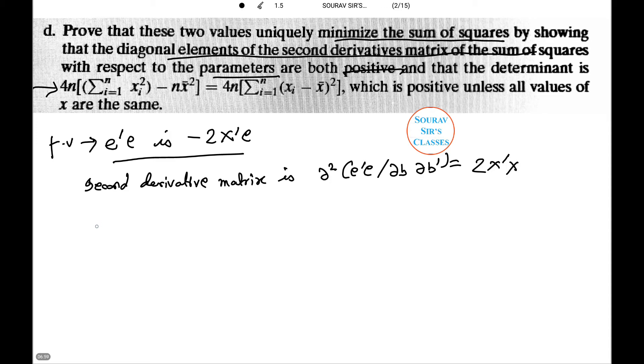The diagonal elements are 2n and 2 summation i equals 1 to n x_i^2 which are clearly both positive. The determinant is 2n times 2 summation i from 1 to n x_i^2 minus 2(summation i from 1 to n x_i)^2.